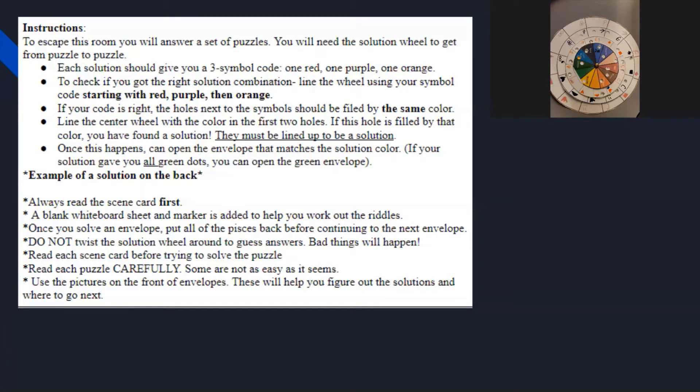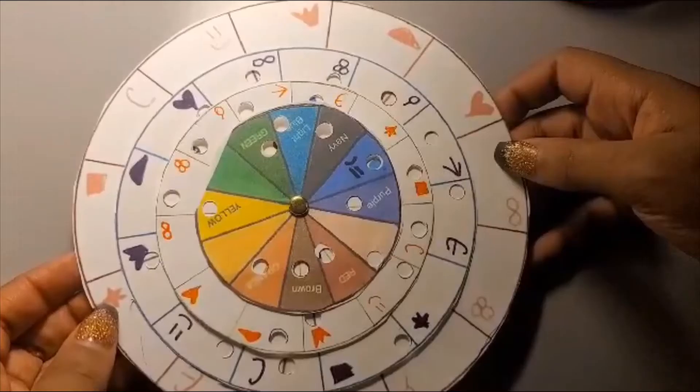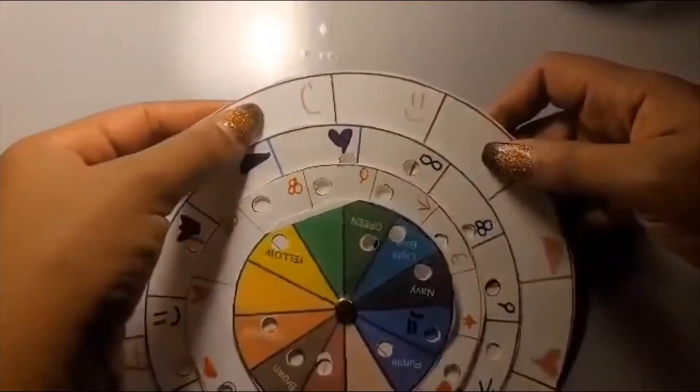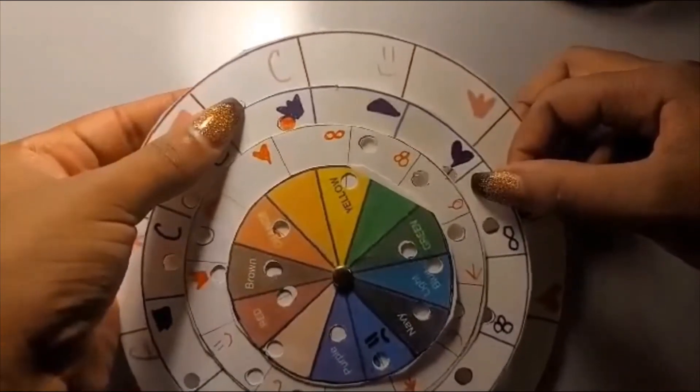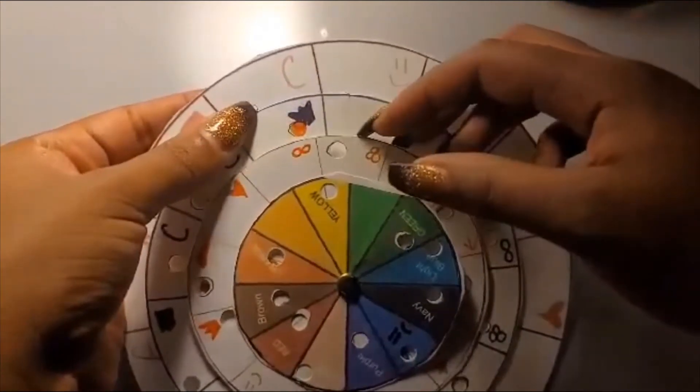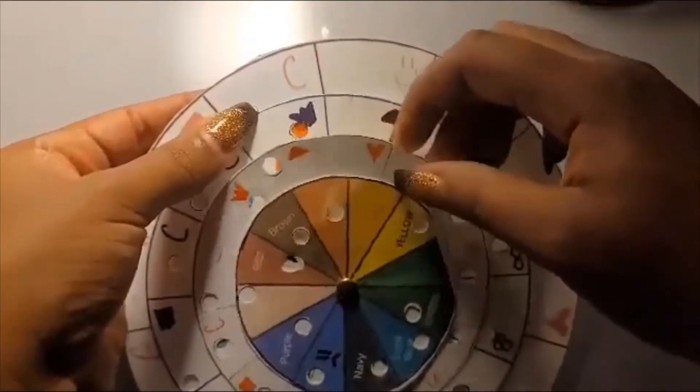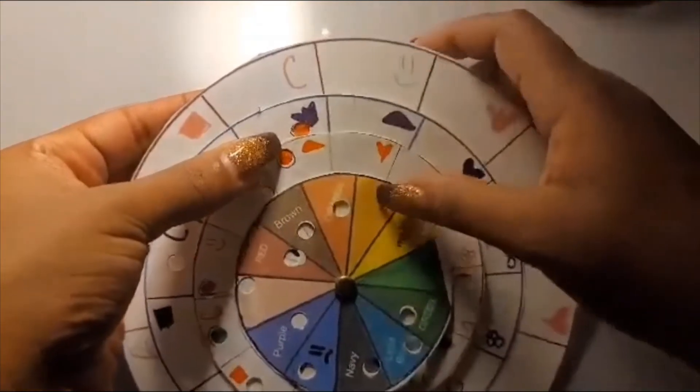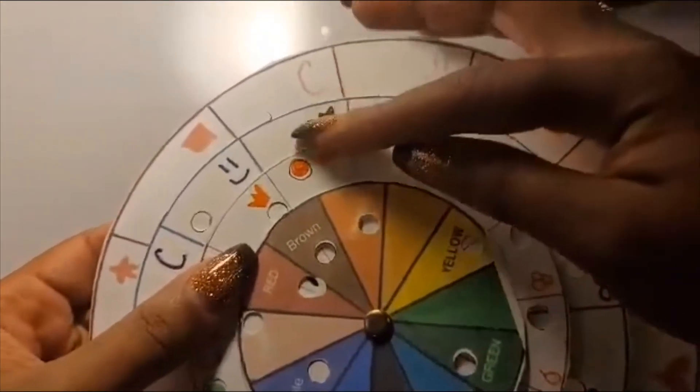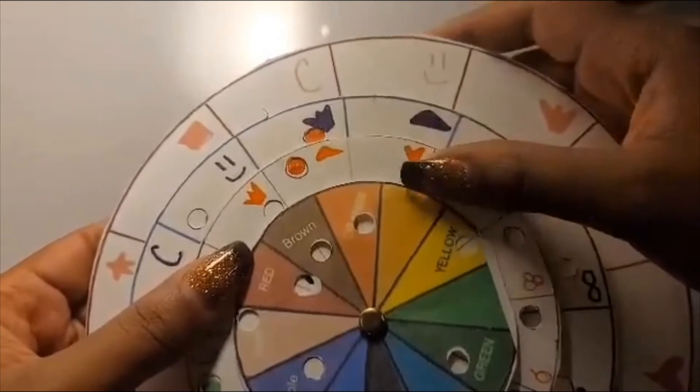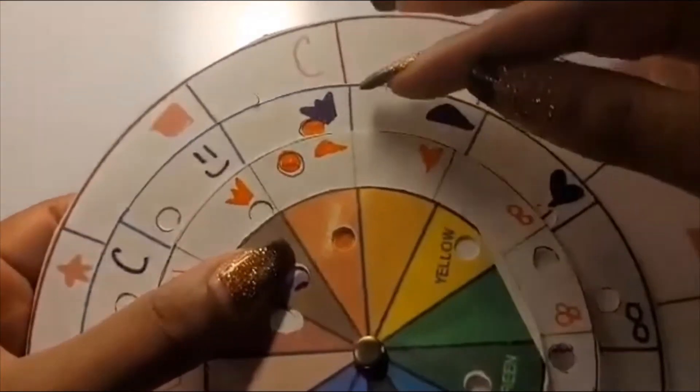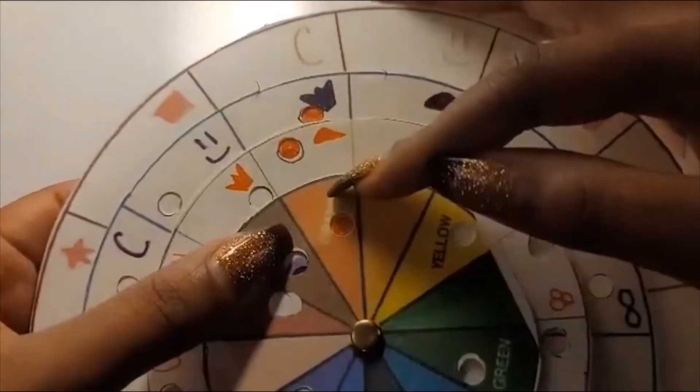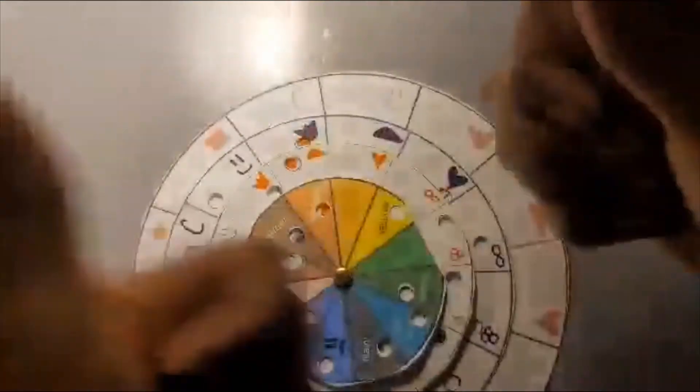An example would be, one of my solutions is the C symbol, the crown symbol, and then half circle. So first start with the C symbol. I will then move to the crown symbol, and then the half circle. The color filled in these two holes is orange. So I will smooth my wheel to orange. I see now that orange is filled in here. This means I got my solution correct and I can now move on to the orange envelope.